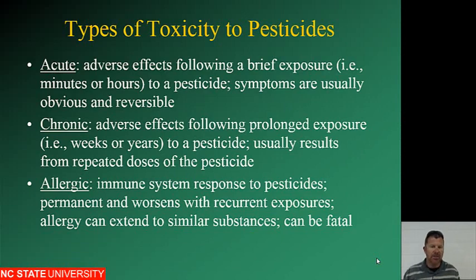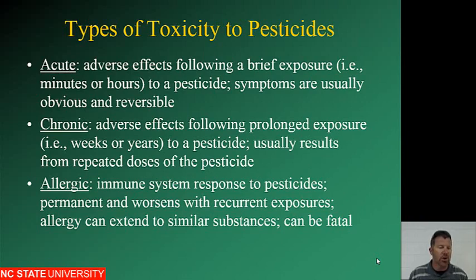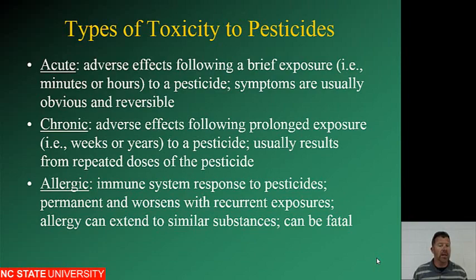Types of toxicity to pesticides: we have acute, chronic, and allergic. Acute is brief exposure — it happens within minutes or hours. Symptoms are usually obvious and reversible, less than 24 hours. Chronic is adverse effects following prolonged exposure — weeks or years — resulting from repeated doses. And then allergic is an immune system response to the pesticide. It permanently worsens with recurrent exposures. Allergy can extend to similar substances and can be fatal.